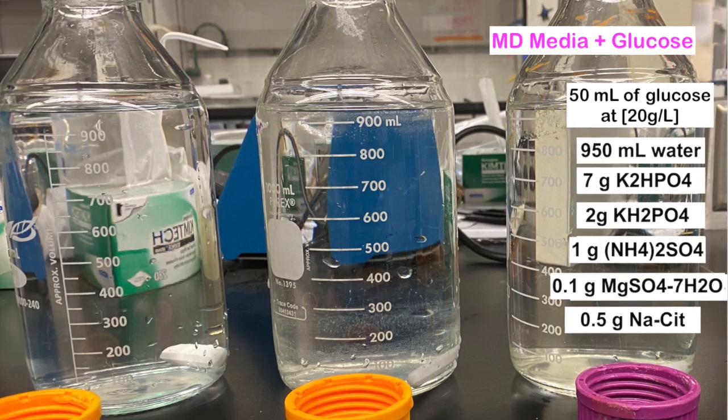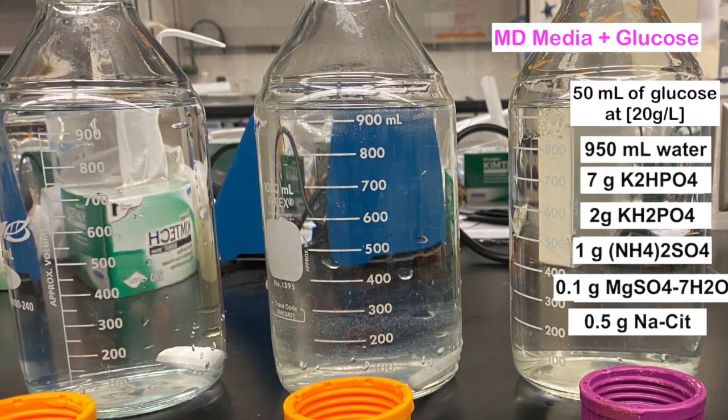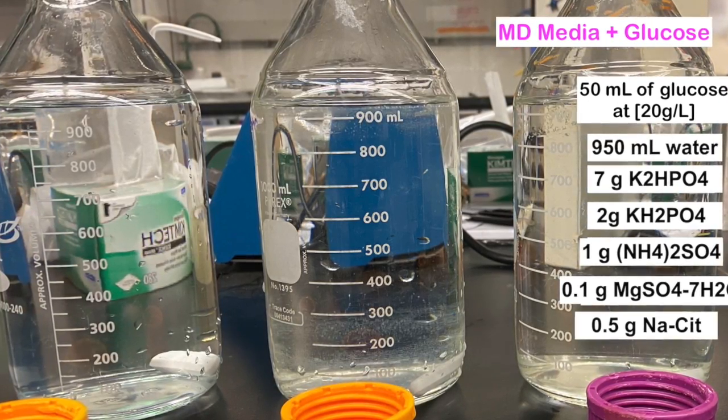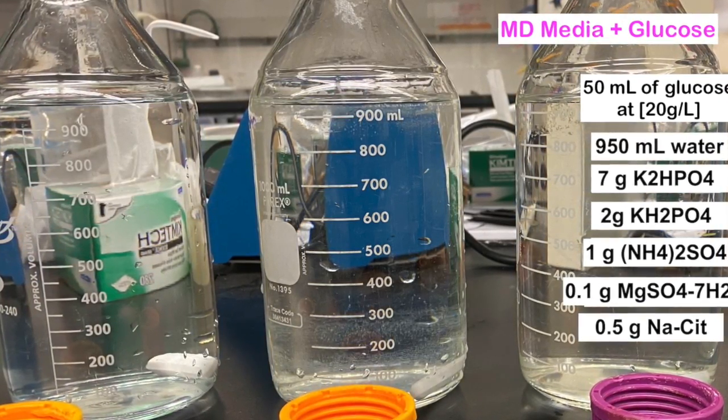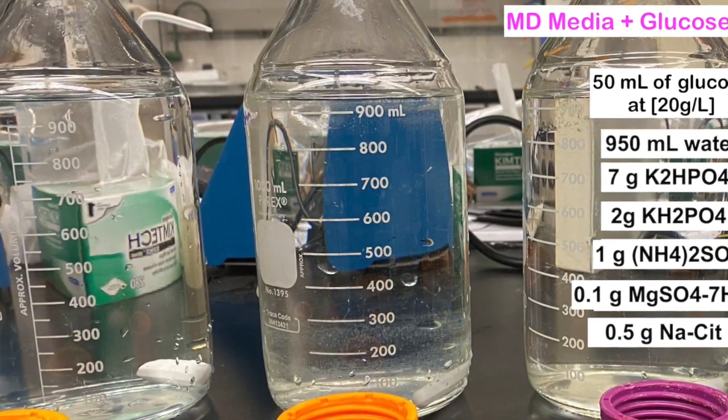The MD media has been sterilized but it is not complete. The ingredient glucose is a sugar and cannot be autoclaved because it will crystallize under high heat. Instead, a glucose solution is filter sterilized at a concentration of 20 grams per liter and then added to the MD media.